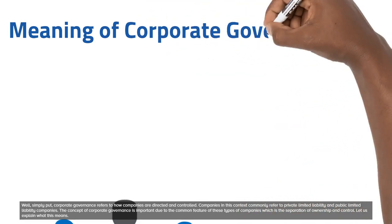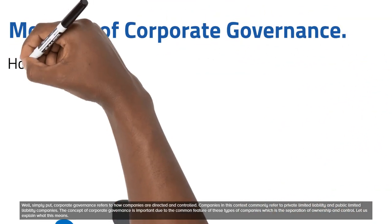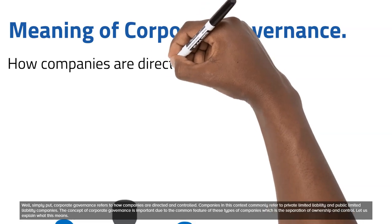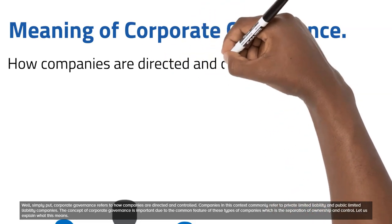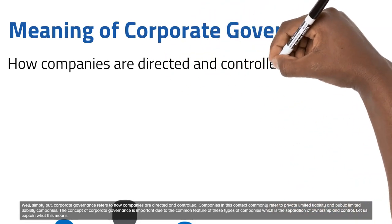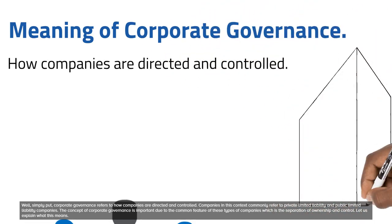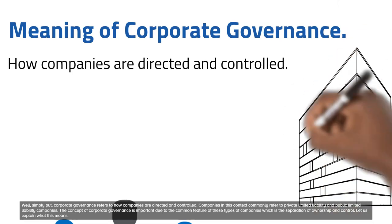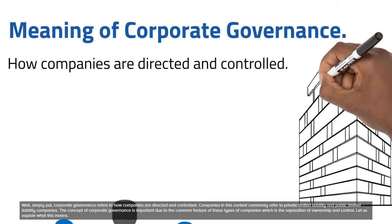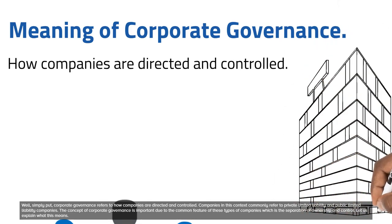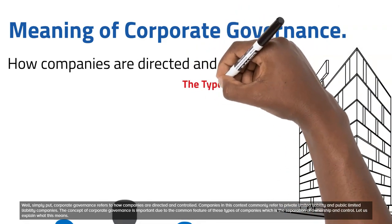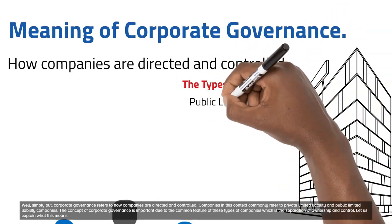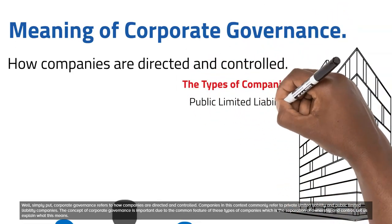Simply put, corporate governance refers to how companies are directed and controlled. Companies in this context commonly refer to private limited liability and public limited liability companies. The concept of corporate governance is important due to the common feature of these types of companies, which is the separation of ownership and control.